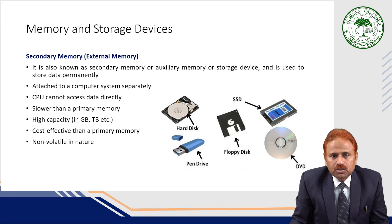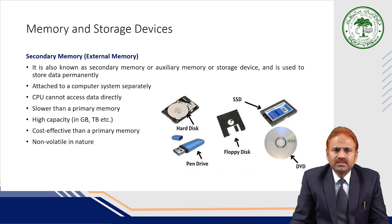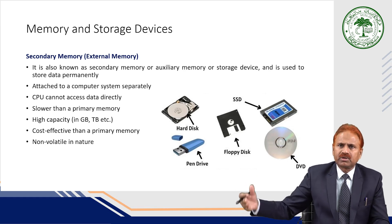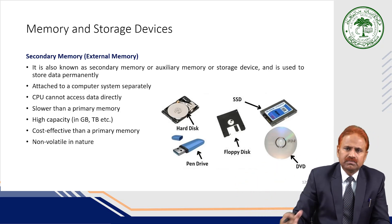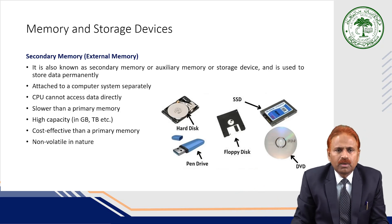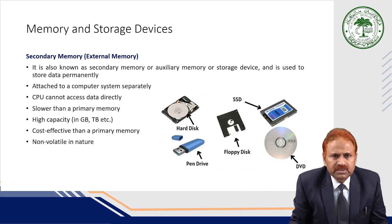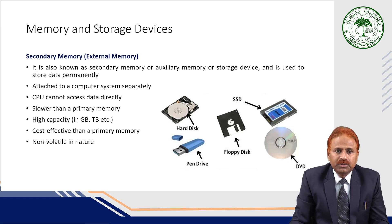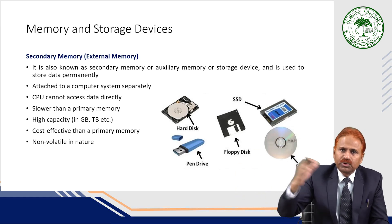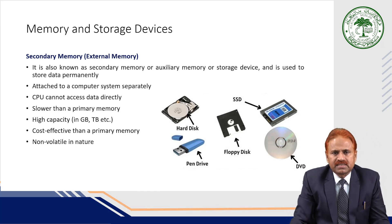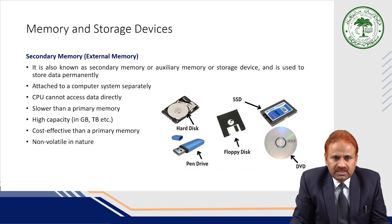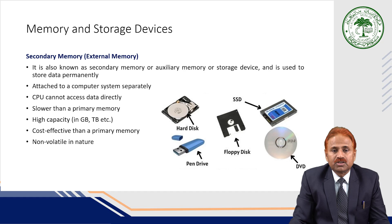Secondary memory is also known as auxiliary memory or storage devices, and it is used to store data permanently — just like a diary where we note information for future reference. It is attached to the computer system separately, and the CPU cannot access data directly from it. As mentioned, data must first be uploaded to main memory before going to the CPU. Secondary memory is slower than primary memory but has high capacity — it can store data in gigabytes or even terabytes — and it is more cost effective.